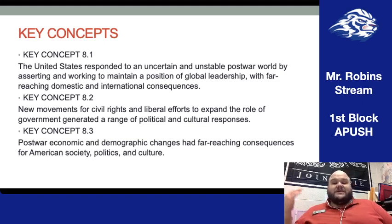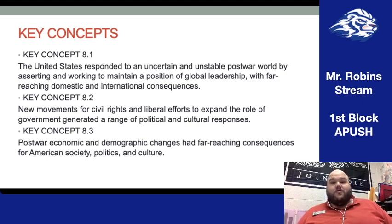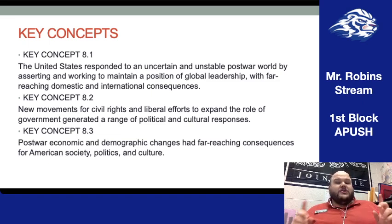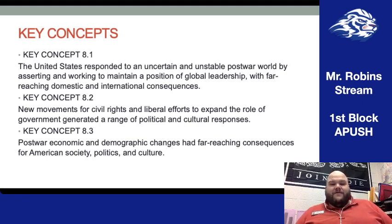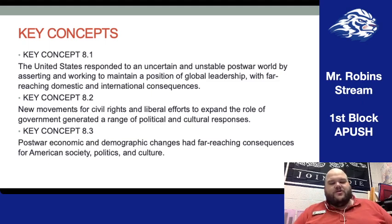We'll also talk about other movements outside of the African American Civil Rights Movement that began in Period 8. We'll also start to talk about, by the end of the unit, some of the backlash to this growth in government programs that begins to appear by the end of Period 8, and that will become really important as we move forward into Period 9. Key Concept 8.3: post-war economic and demographic changes had far-reaching consequences for American society, politics, and culture. We'll start talking about the economy by the end of this week, and we'll discuss demographic changes by the time we get to the Great Society, as America becomes more diverse and the immigration barriers set up in the 1920s begin to be lifted.